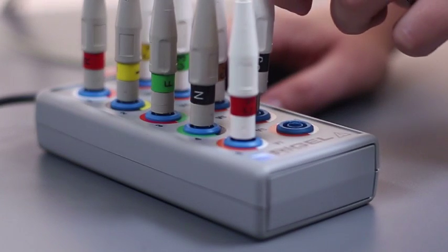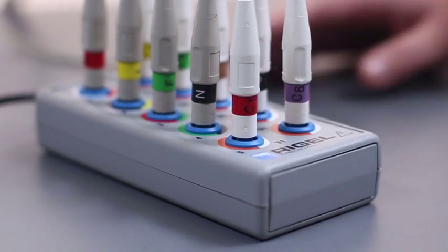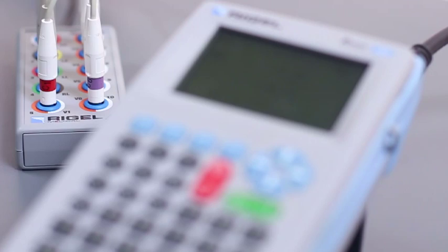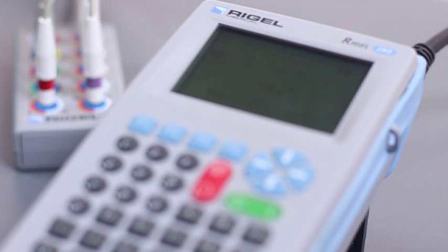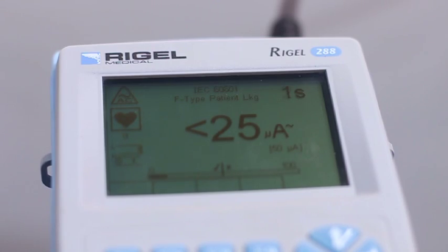With 10 individual patient leakage circuits, the Riegel 288 offers peace of mind when it comes to fully meeting any test standard in a single test routine. It reduces the overall test time of multi-parameter monitors by up to 50%, compared to automatic safety analyzers with only 5 patient circuits.